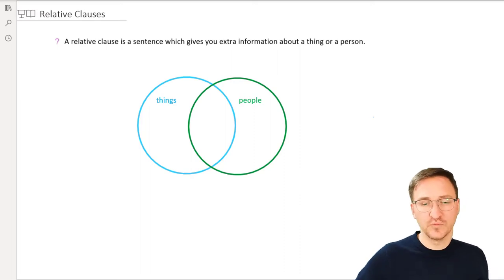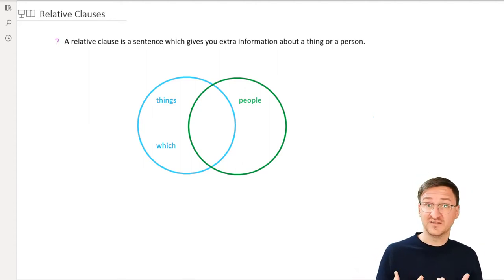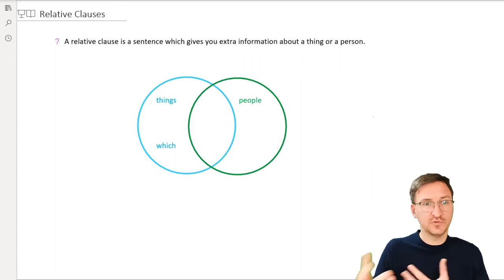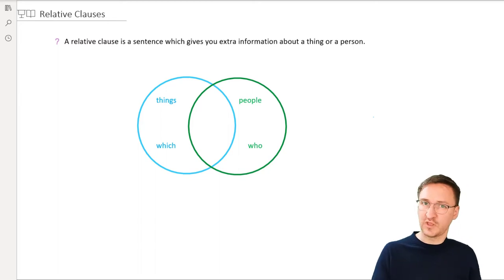And what can we do there? Well, first of all, we need to find a relative pronoun. And for things, that's simply which. So, a sentence which gives you extra information. Or we go for people, then we have got who. My grandma is the person who won the baking competition. So, who tells us we're talking about a person.